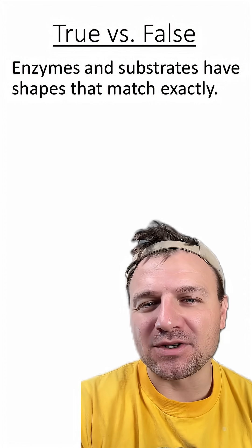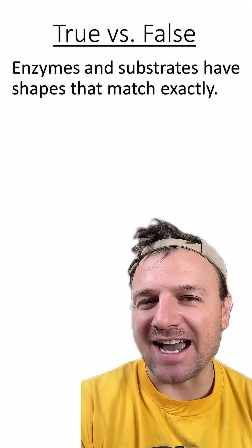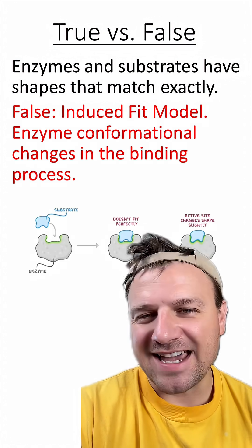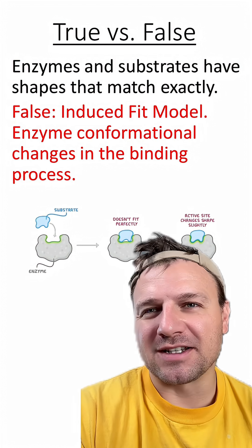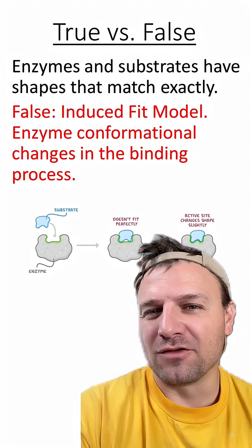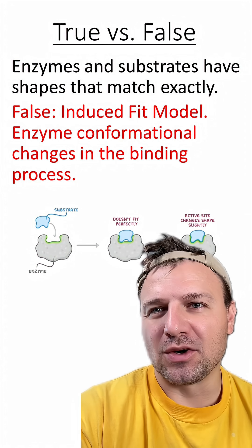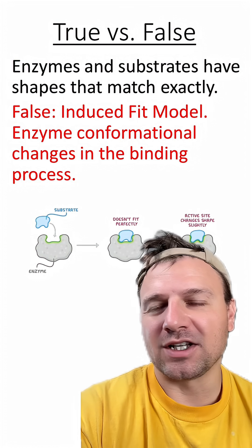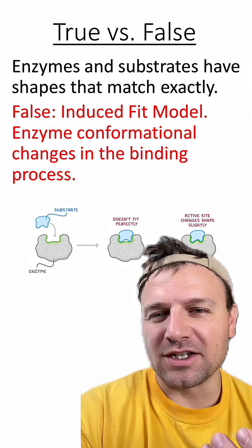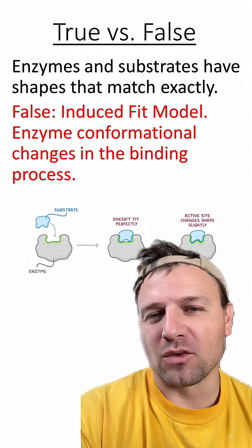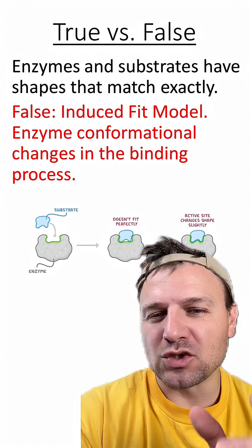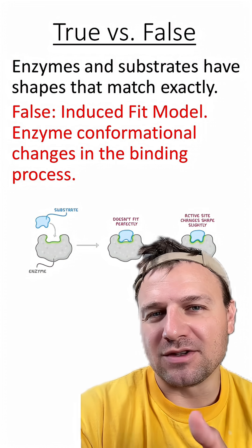Enzymes and substrates have shapes that match exactly. Is this true or false? This is actually false, and it's a big misconception in biology. It's kind of our own fault because we show enzymes and substrates matching like a lock and a key early on. However, there is something called the induced fit model, where the enzyme will have some conformational change when binding to the substrate.